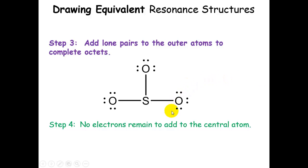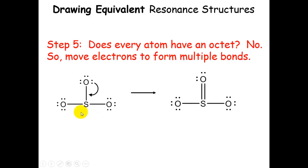Let's check for octets. All the oxygens have octets, but sulfur does not. We need to move electrons around and form multiple bonds. Sulfur is only short one bond, so we only need to move one electron pair. Let's take this electron pair and make a double bond here. Once we do that, this oxygen still has an octet, sulfur now does, and the other oxygens haven't changed.